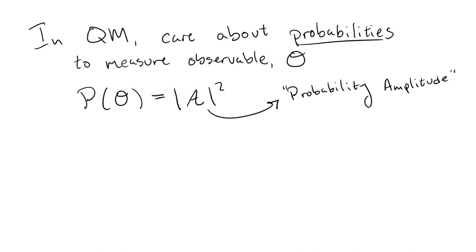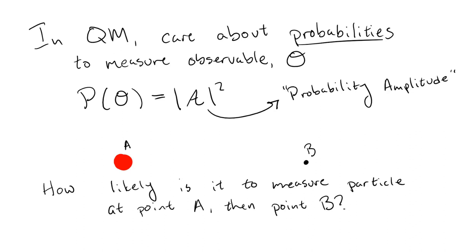Perhaps the simplest of these amplitudes to consider is one where we measure a particle at one point at some time, and then measure it again at a different point at a later time. How do we find this amplitude? We can use a method developed by multiple physicists in the early to mid 20th century, but completed by Richard Feynman in 1948.